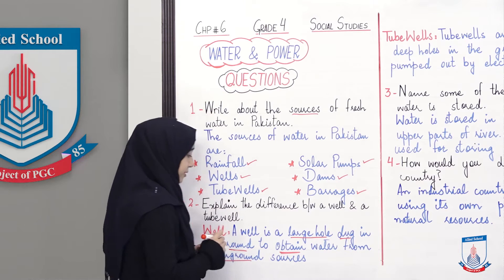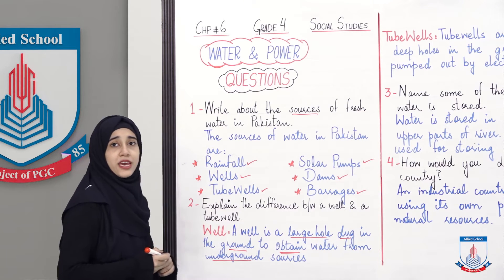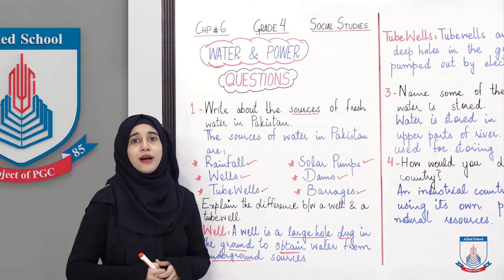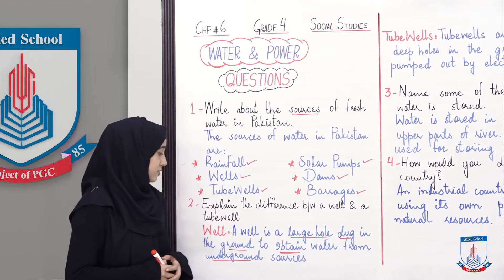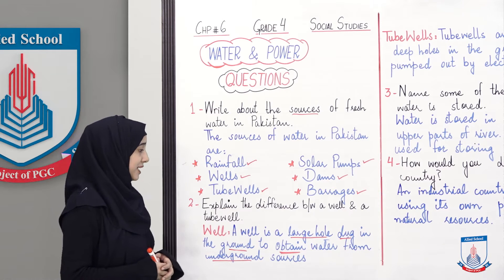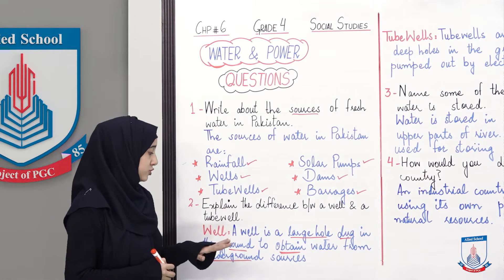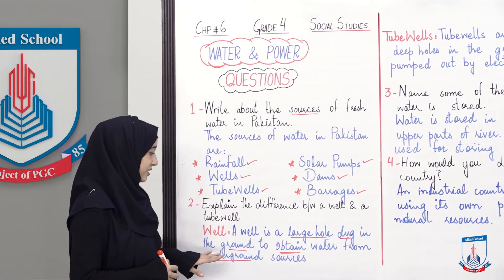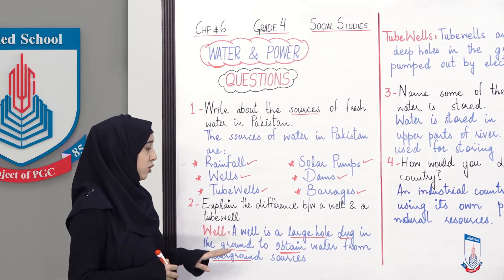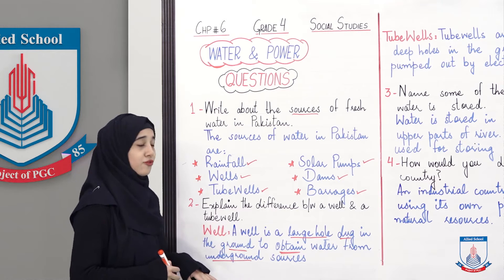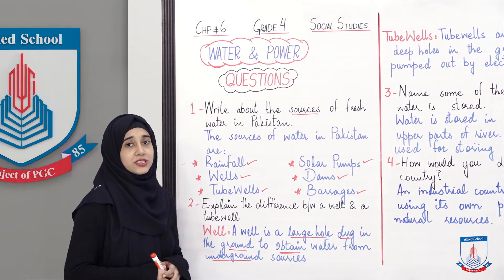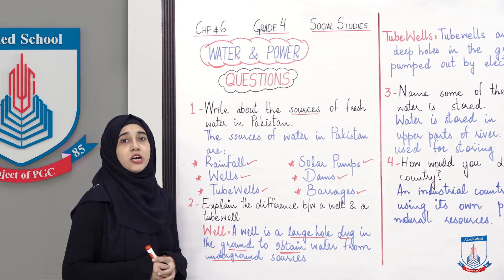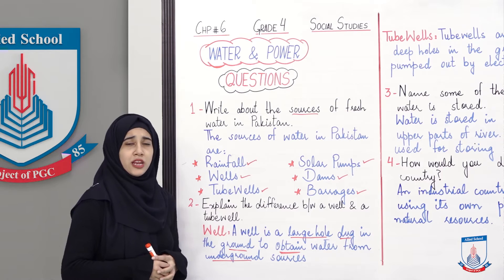Yani ke zere zameen joh paani hai, woh istamal kiya jata hai kuen mein. So, once again, a large hole dug in the ground to obtain water from underground sources. And what is it? It is a well.